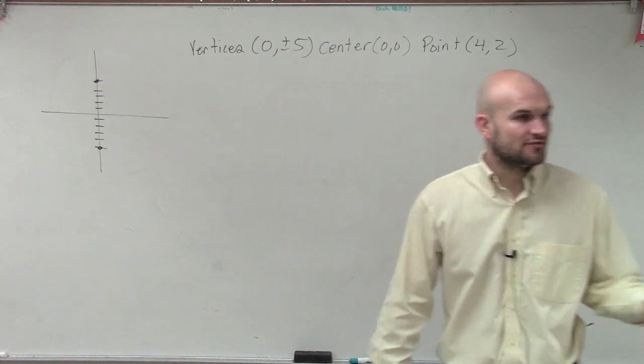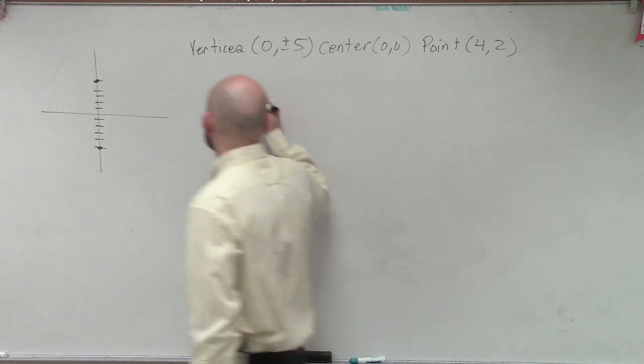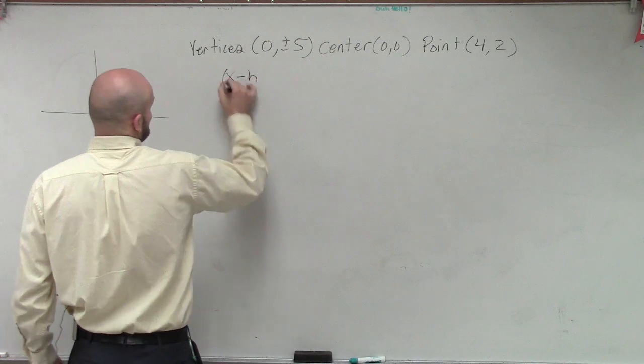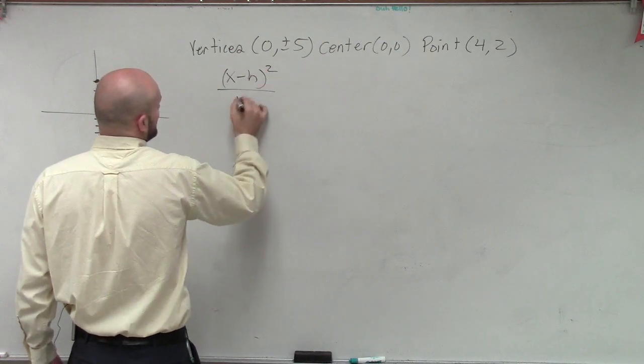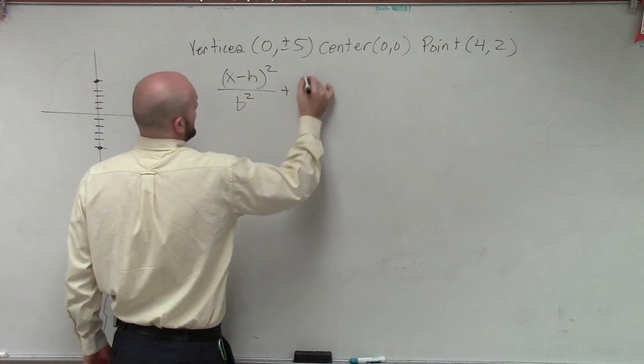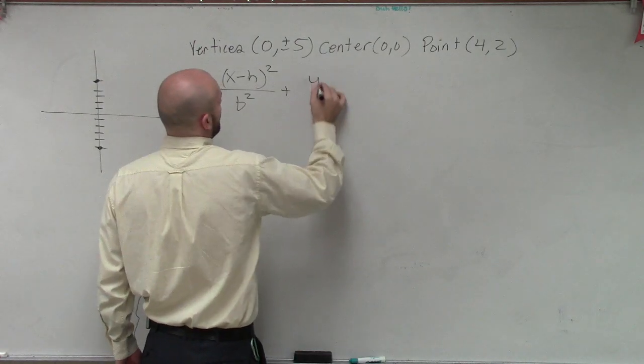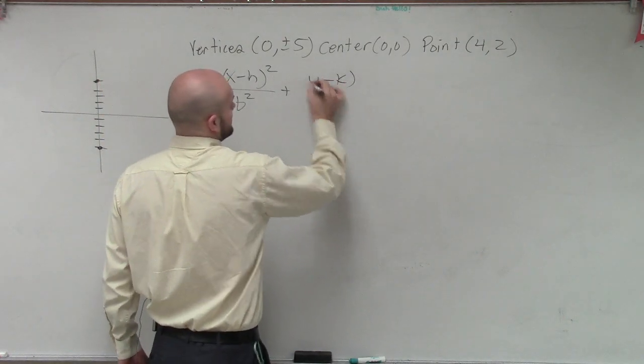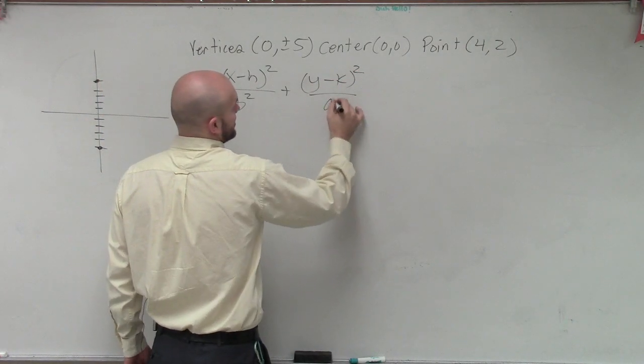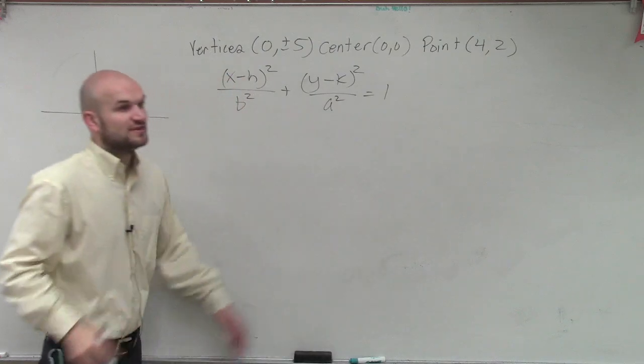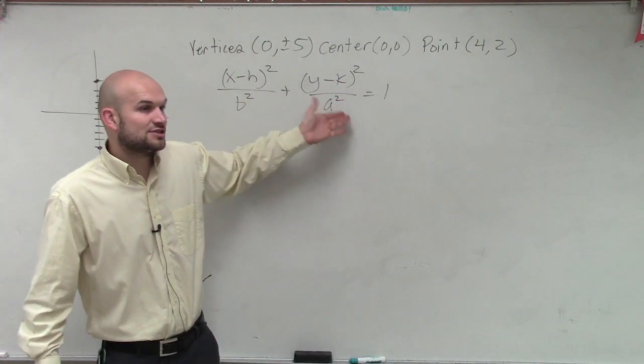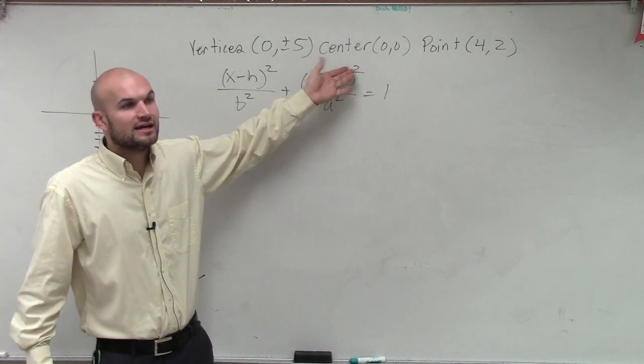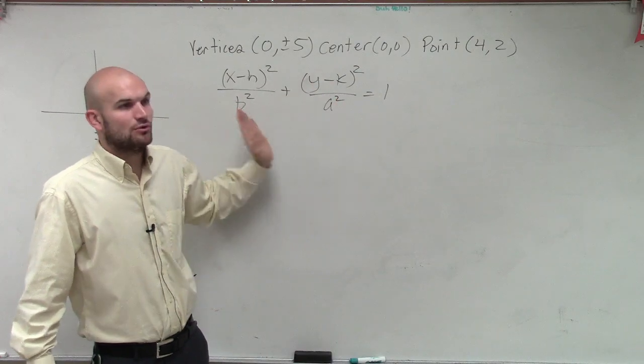So therefore I know now exactly the formula that I'm going to have to use, which is going to be x minus h squared over b squared plus... Well no, it's going to be vertical. So y minus k squared is going to have a squared.